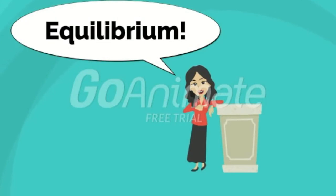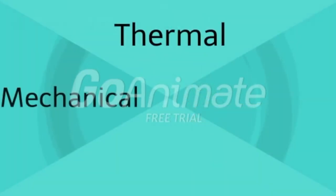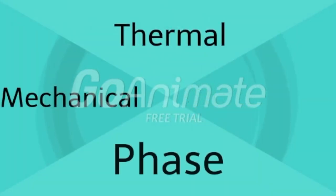Speaking of equilibrium, for a system to be in thermodynamic equilibrium, it must satisfy four equilibriums: thermal, mechanical, phase, and chemical equilibrium.